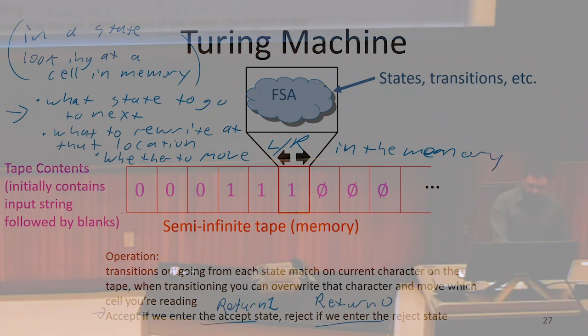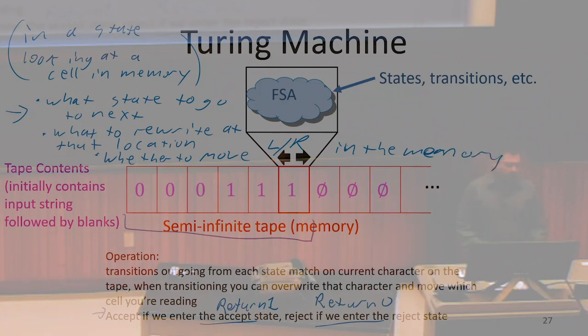When we start computing, our memory is preloaded with the input. We're going to have a bunch of bits already on the tape, and we understand those bits to be the input.